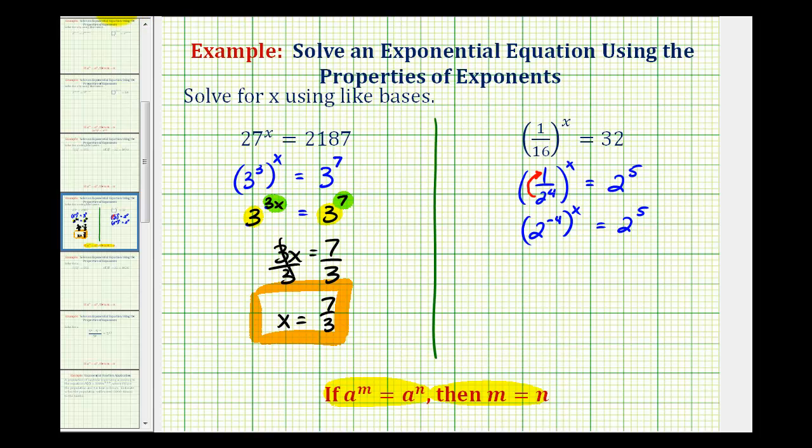Now, we do have a common base, but just like in the previous problem, we do have a power raised to a power here, so we need to multiply these exponents, so we're going to have 2 to the power of negative 4x equals 2 to the 5th, and now that these are equal and the bases are the same, we can conclude that negative 4x must equal 5, because the exponents must also be equal.